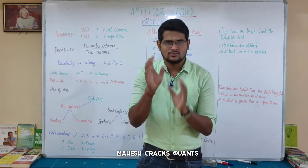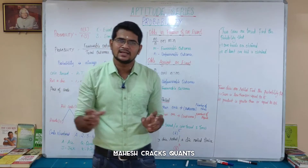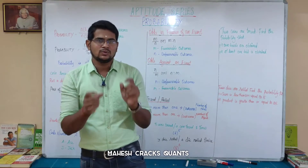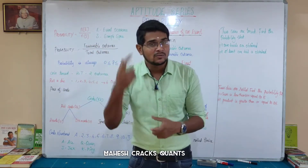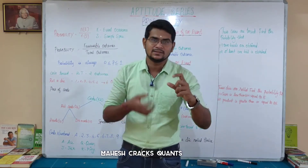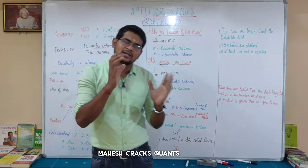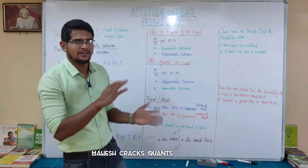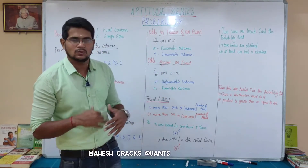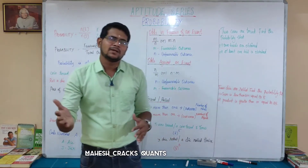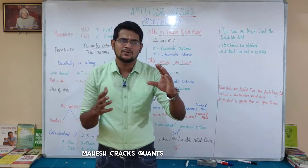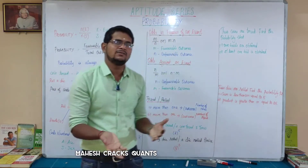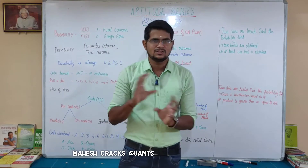Odds against is the inverse. Odds against puts unfavorable first and favorable second. So odds against is 30 to 20, which is 3 to 2. Probability compares favorable to total. Odds compares favorable to unfavorable — they are two different things. M to N is odds in favor; N to M is odds against.